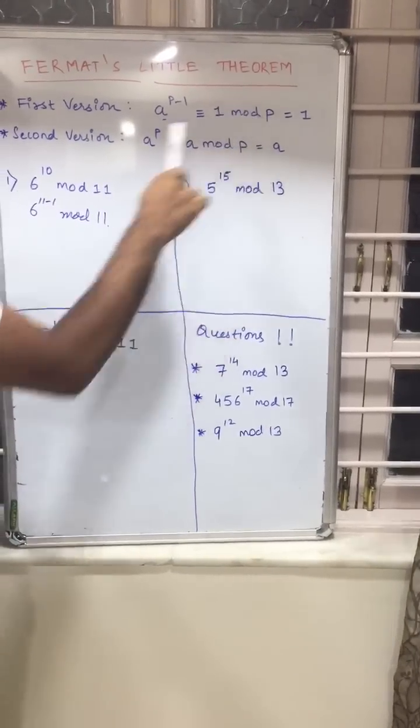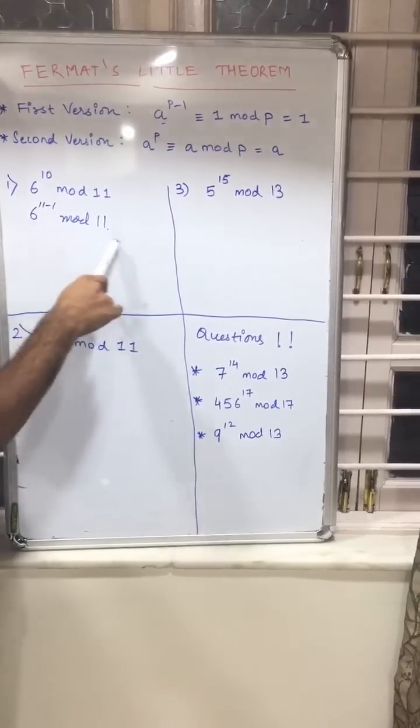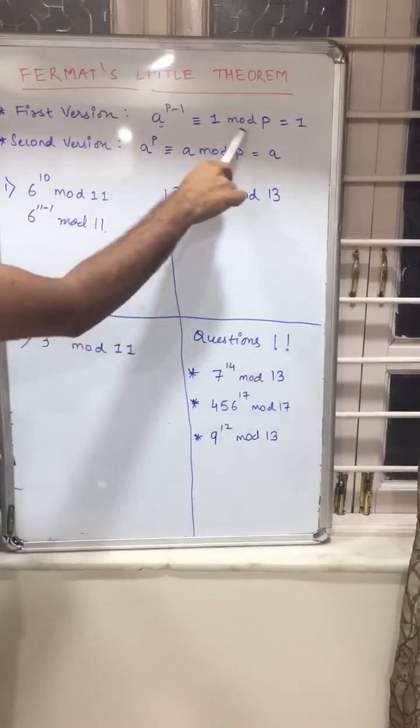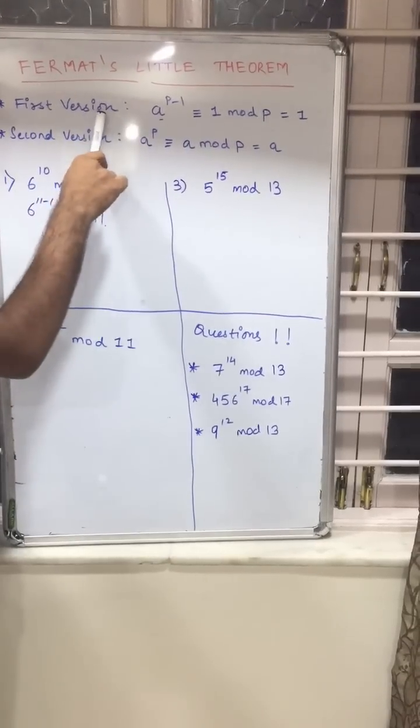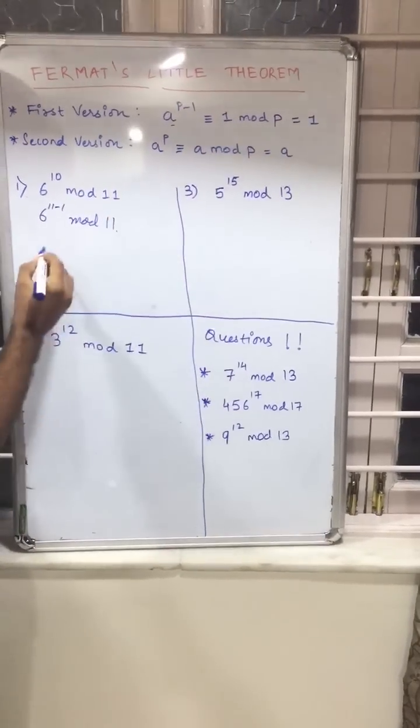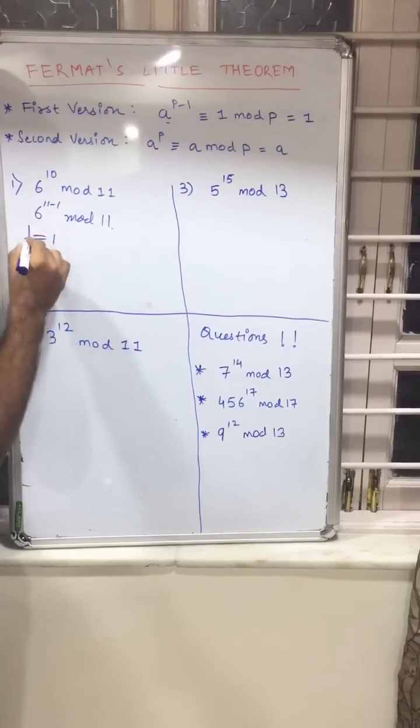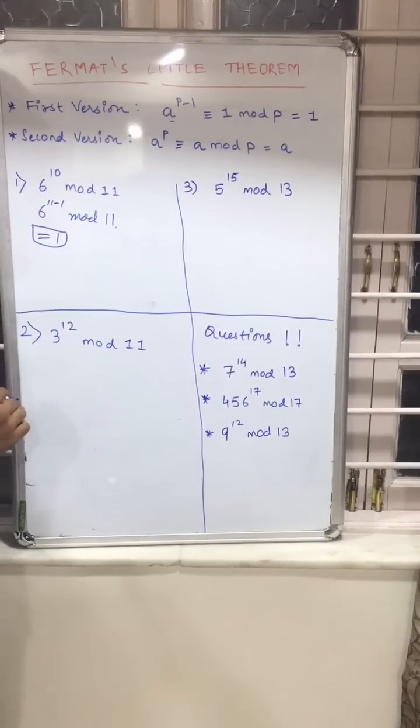So now what I mean is that whenever you find this sort of equation, our answer will be 1, because if our equation satisfies first version, our answer will always be 1. So we can here directly write our answer will be equal to 1.